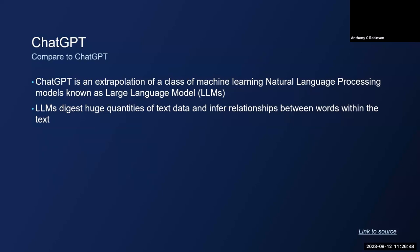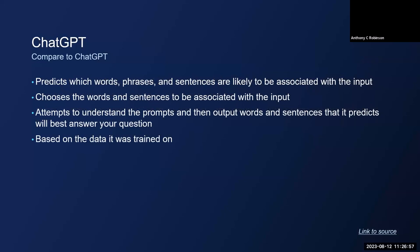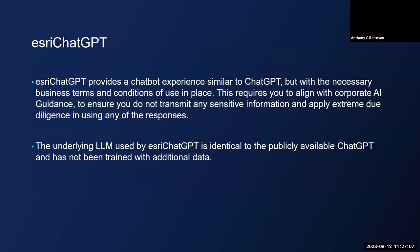This leads to ChatGPT leading us in a certain direction even within ESRI. It's an extrapolation of natural language processing models that infer relationships between words and text, phrases and sentences. Depending on your input, it gives you an output, but it's always based on the data it was trained on. Just recently within ESRI, we developed ESRI ChatGPT because we have legal responsibilities using regular GPT. The underlying models and data used are the same as ChatGPT.